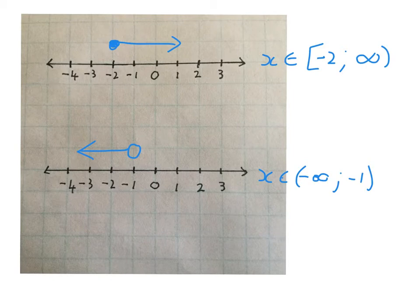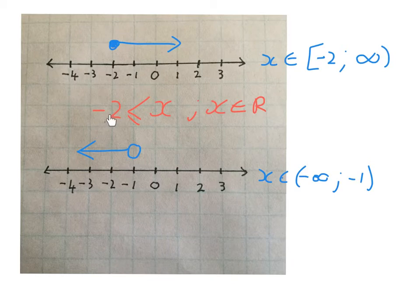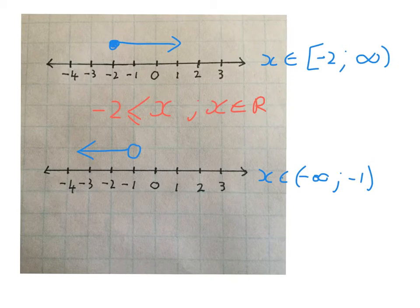Here are three ways of writing the same thing. The first says: the numbers we're looking for are bigger than or equal to minus 2 and they are real numbers. The second says: x is an element of the real numbers, minus 2 and everything bigger. The third says: x is an element of the interval starting at minus 2 going to positive infinity. Three different ways to write the same thing — you can usually choose which one to use, or you'll be told which. By the end of grade 10 you'll be able to use any of these.